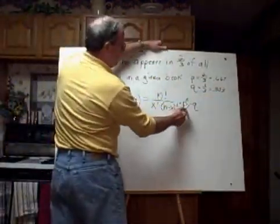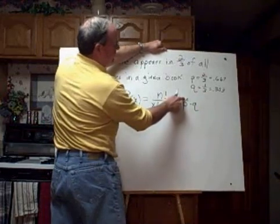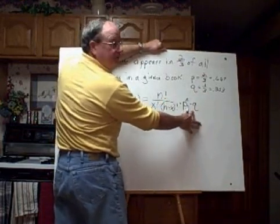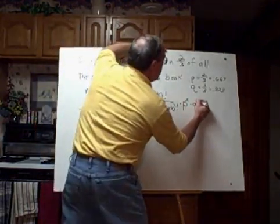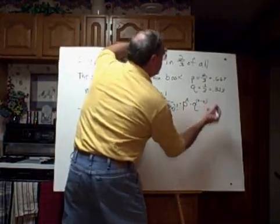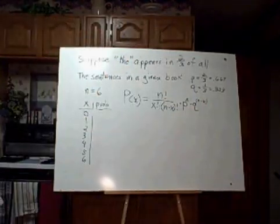Now, this is probability of success raised to the number of successes. Q is the probability of failure, and we're going to raise it to the number of failures, which is N minus X. All right? Ugly formula.